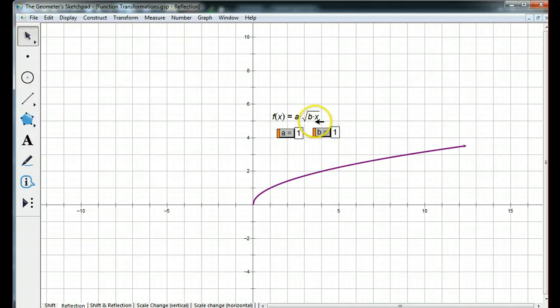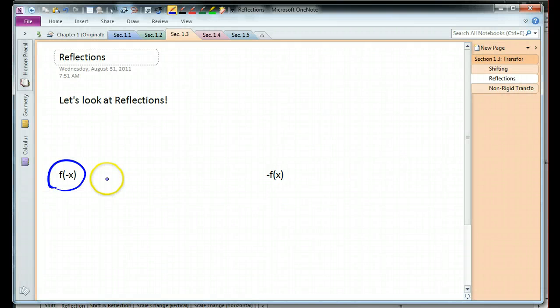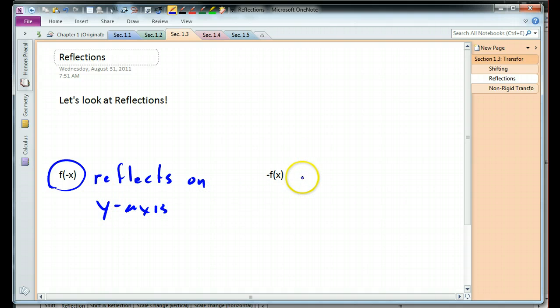Now, let's change the sign of x inside the function. There's square root of negative x, square root of x. So, let's summarize that. If we have f of negative x, it reflects on the y-axis, and negative f of x reflects on the x-axis.